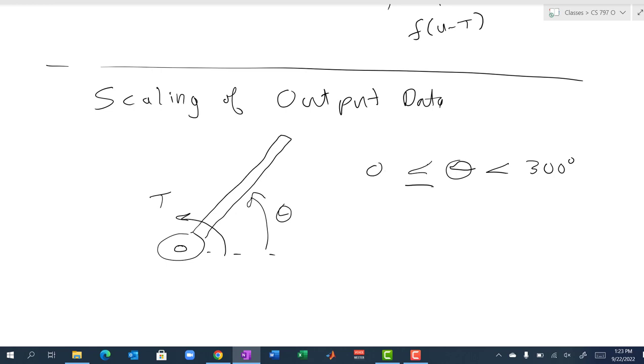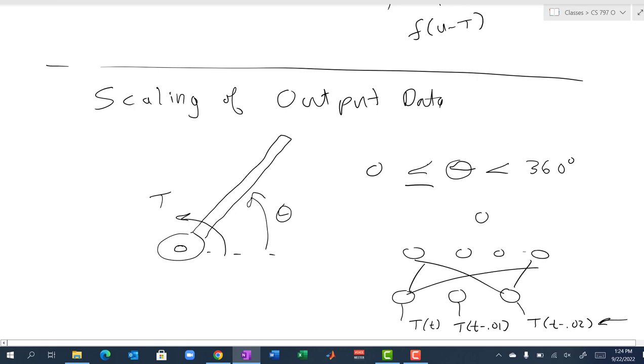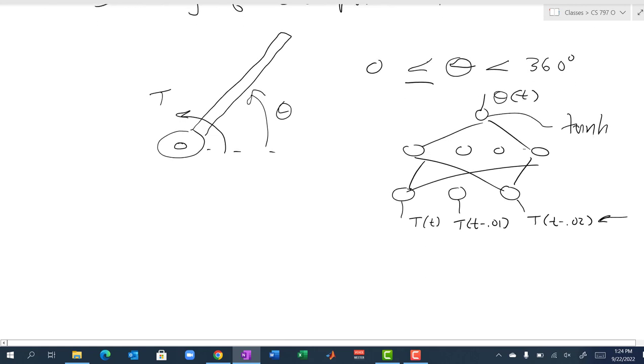Theta in this example can be between zero and 360 degrees. Let's say we want to create a neural network that takes in torque values, a current torque value at time t and a torque value a hundredth of a second ago and a torque value two hundredths of a second ago. This would be like a torque time history, how the torque changes with time, and we want to create a neural net that would output theta at the current time. Let's say this output neuron has a tanh activation function.